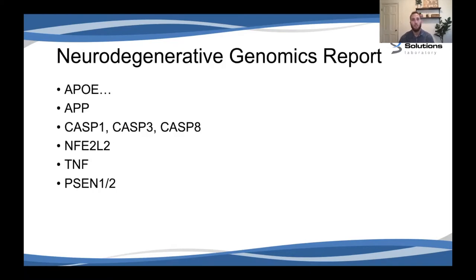Within the neurodegenerative genomics report, the first and biggest gene is ApoE — specifically the ApoE4/E4 mutations that confer much higher risk. We could do an entire webinar on ApoE, but what we really want to focus on today are other genes: APP, three different caspase genes, NFE2L2 which is one of our major antioxidant genes, TNF (tumor necrosis factor) involved in chronic inflammation and upregulation of inflammatory cytokines, and the presenilin genes PSEN1 and PSEN2. We'll talk about how each one can be a contributor and why these are areas you should be checking for your patients.